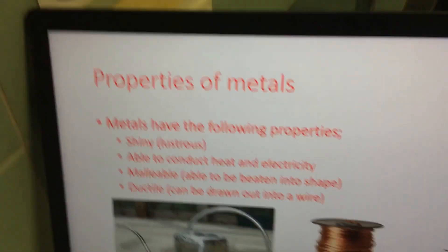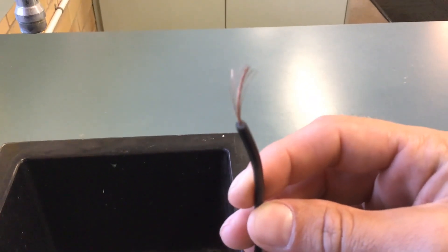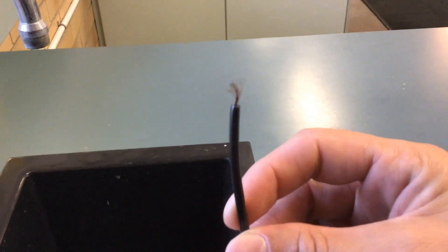And ductile, which means it can be drawn out into a wire. And we saw that it is ductile, it can be drawn into a wire, because copper is the type of metal we find in our electrical wires.